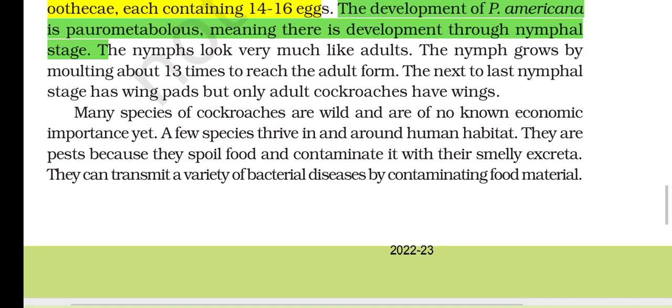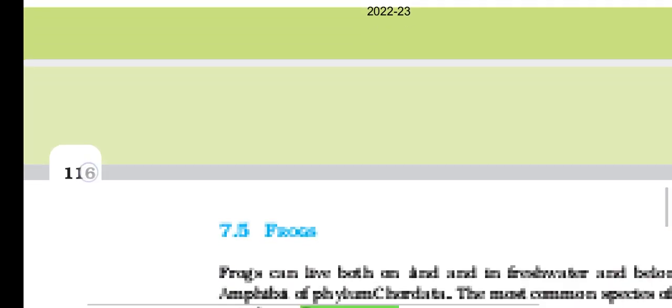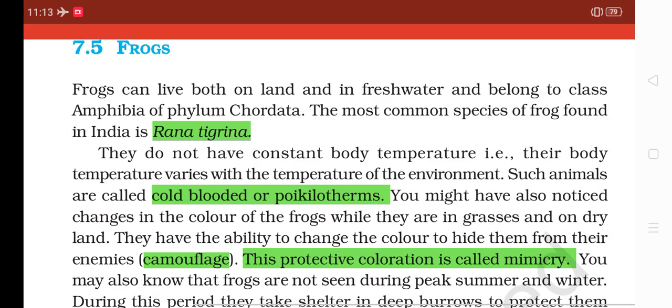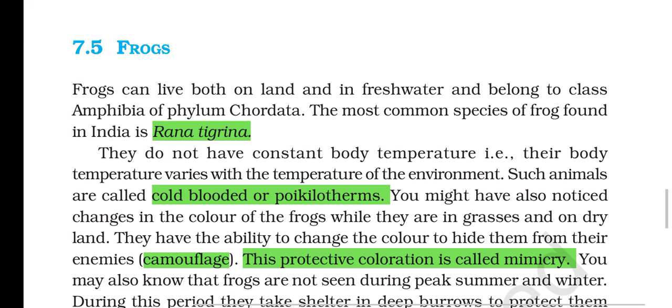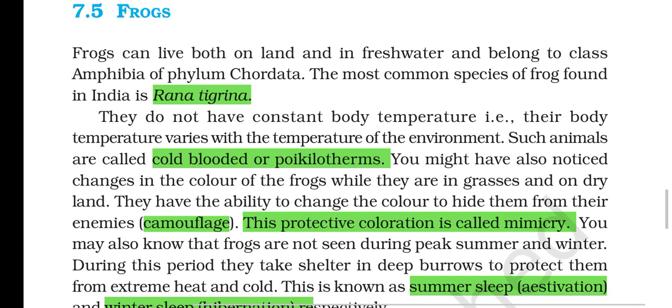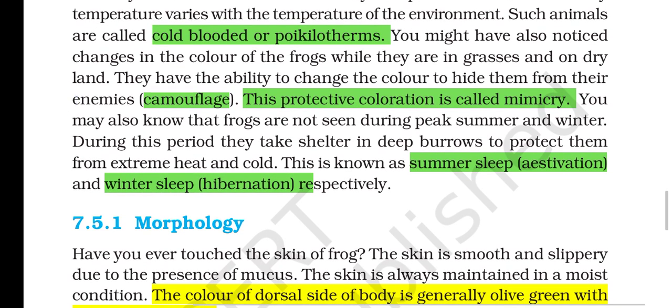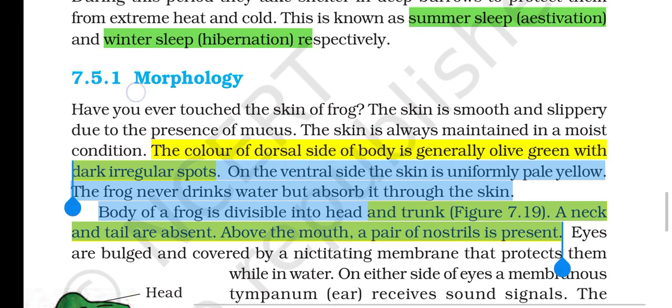Section 7.5: Frogs. Frogs can live both on land and in fresh water and belong to class Amphibia, phylum Chordata. The most common species found in India is Rana tigrina. They do not have a constant body temperature — their body temperature varies with the environment, making them cold-blooded or poikilotherms. Frogs have the ability to change their color to hide from enemies (camouflage); this protective coloration is called mimicry. Frogs are not seen during peak summer and winter; during summer they undergo aestivation and during winter they undergo hibernation, taking shelter in deep burrows to protect from extreme heat and cold.